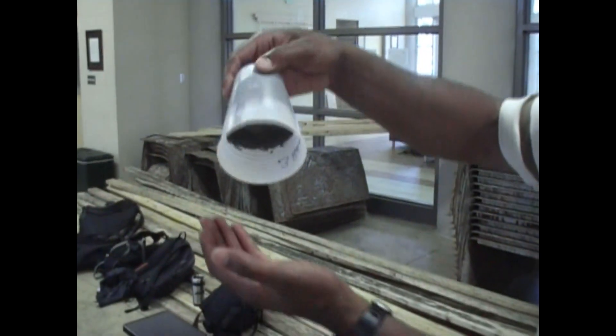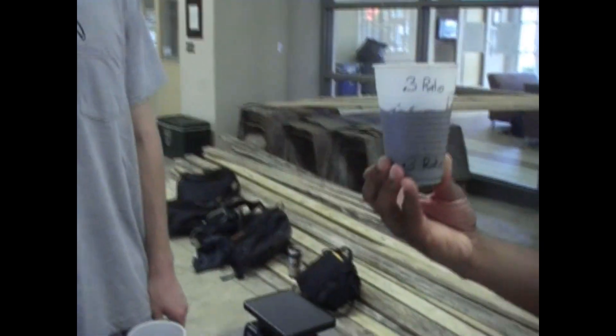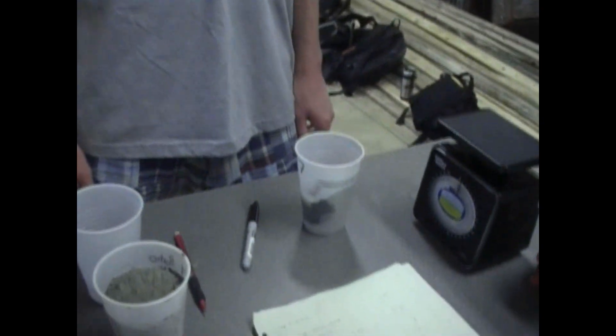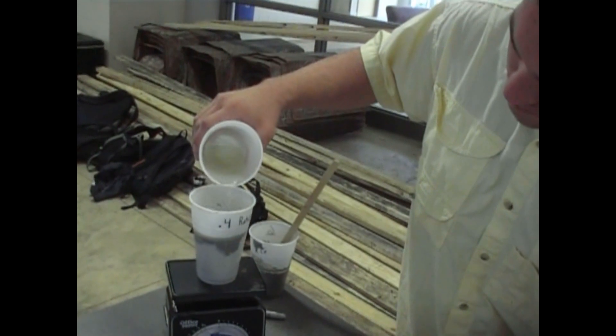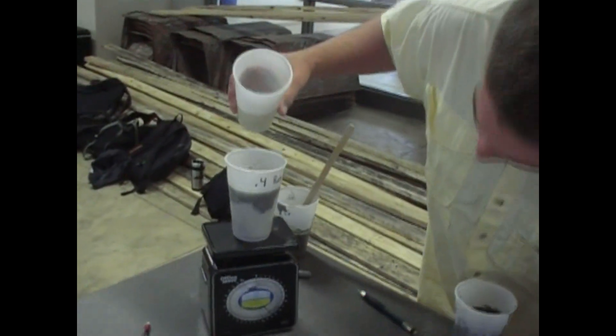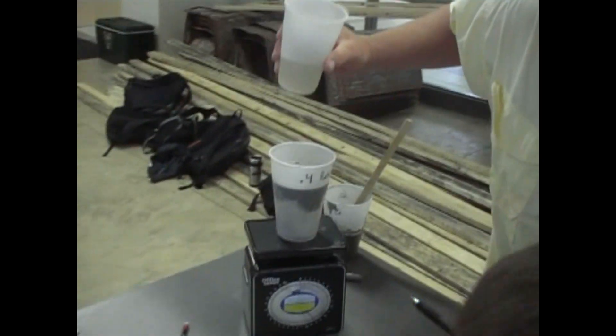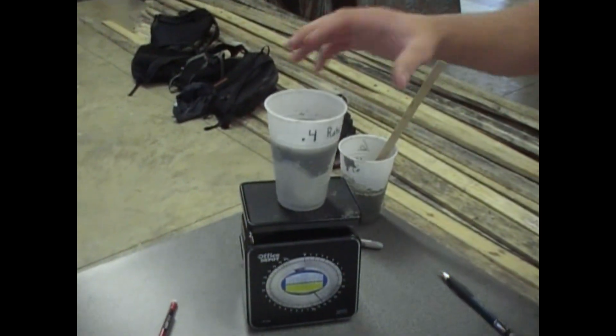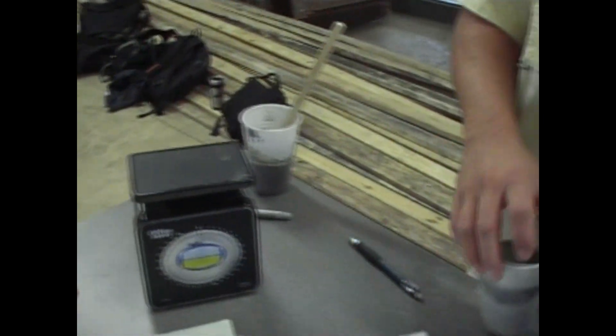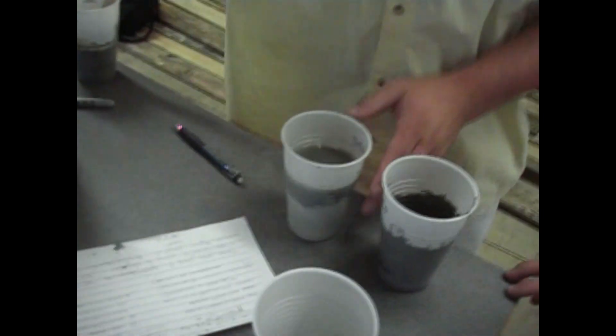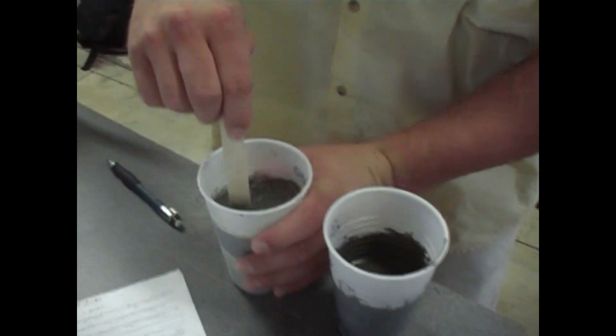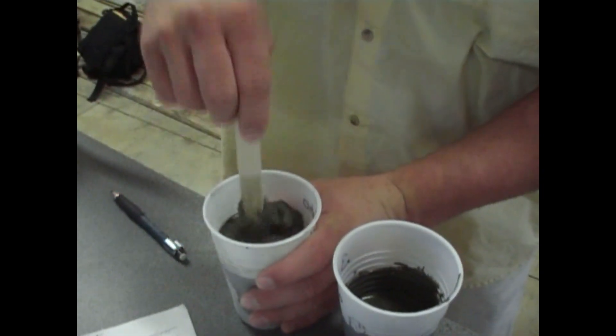0.3 ratio. Pretty thick. Four ounces of water so that should be 14 ounces total. I'll give this a 0.5. I'll give this a 0.4 ratio. It should be kind of thick but not as thick as the 0.3 ratio. It should be a little more workable.